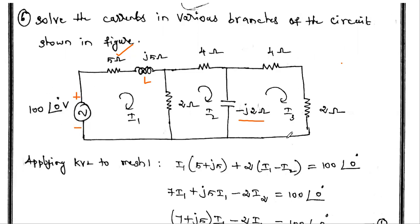The question is to solve the current in various branches of the circuit shown in the figure. We have to find the current flowing through various branches. We can solve this circuit using either mesh analysis or nodal analysis, and now we are going to solve it using mesh analysis.